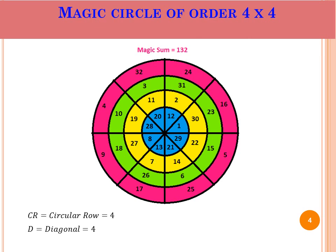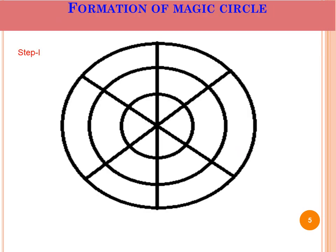Now let me show you how to construct a magic circle. Consider a 3 cross 3 magic circle. Step 1: you have to start from the innermost circular row. Write 1 anywhere in the innermost circular row. Then move to the adjacent circular row and move left — here you put 2. Then again adjacent circular row, move left — here you put 3.